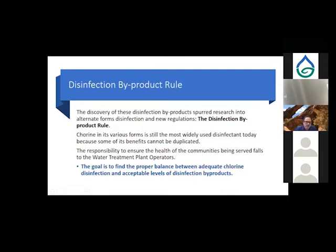One way to manage the development of disinfection byproducts is to manage the organics in our systems and in our raw water. If we can reduce the organics, we reduce the required chlorine amounts, which in turn reduces the overall formation of disinfection byproducts.